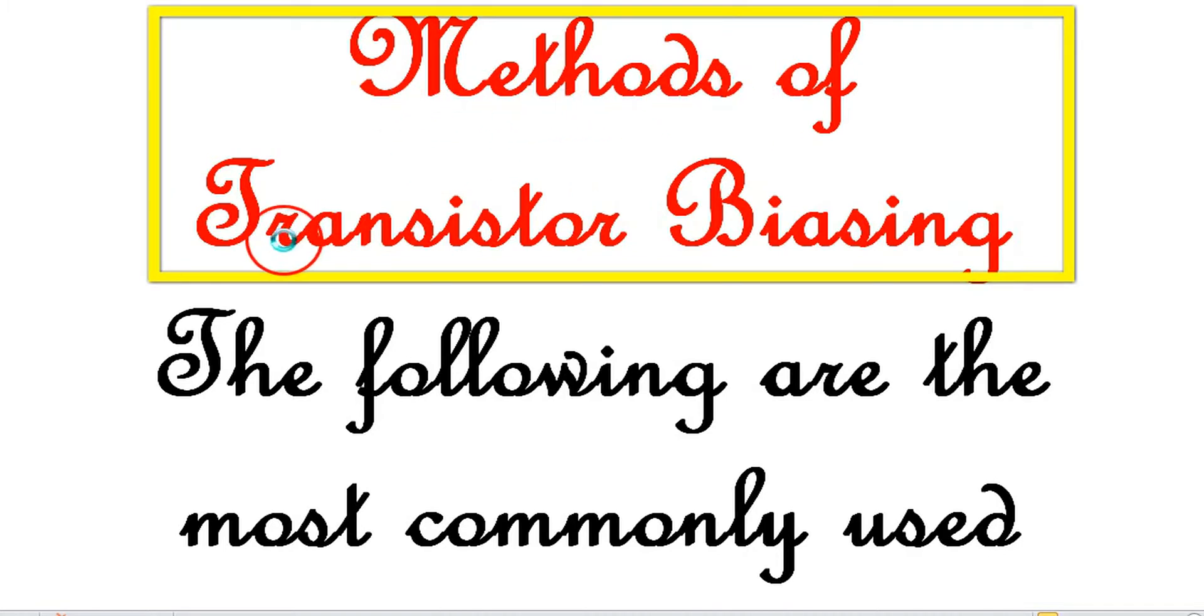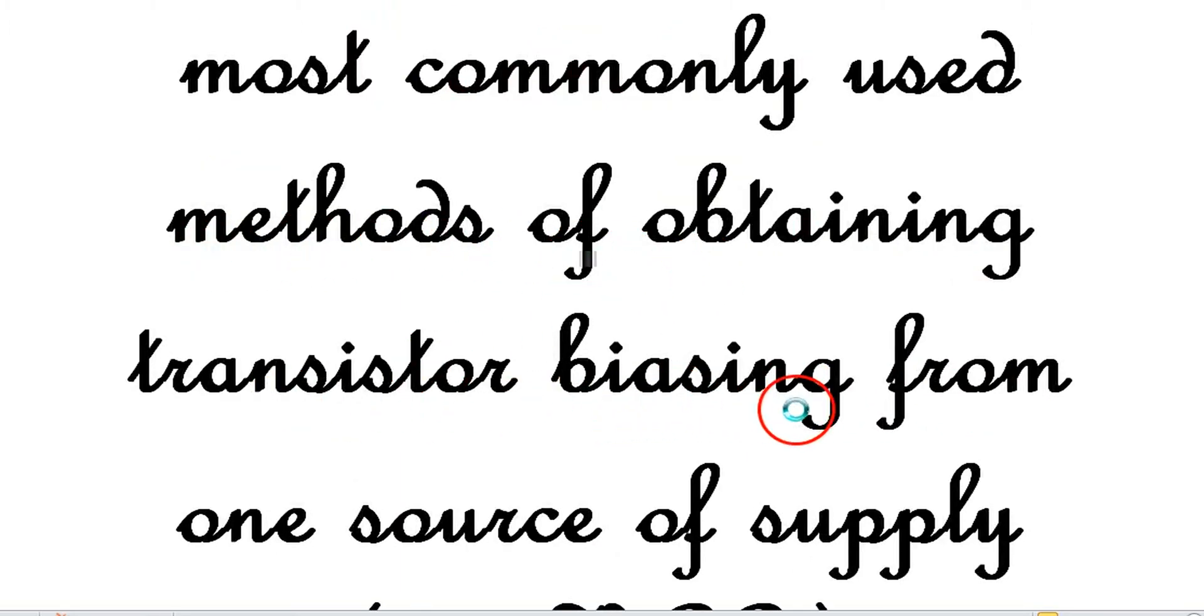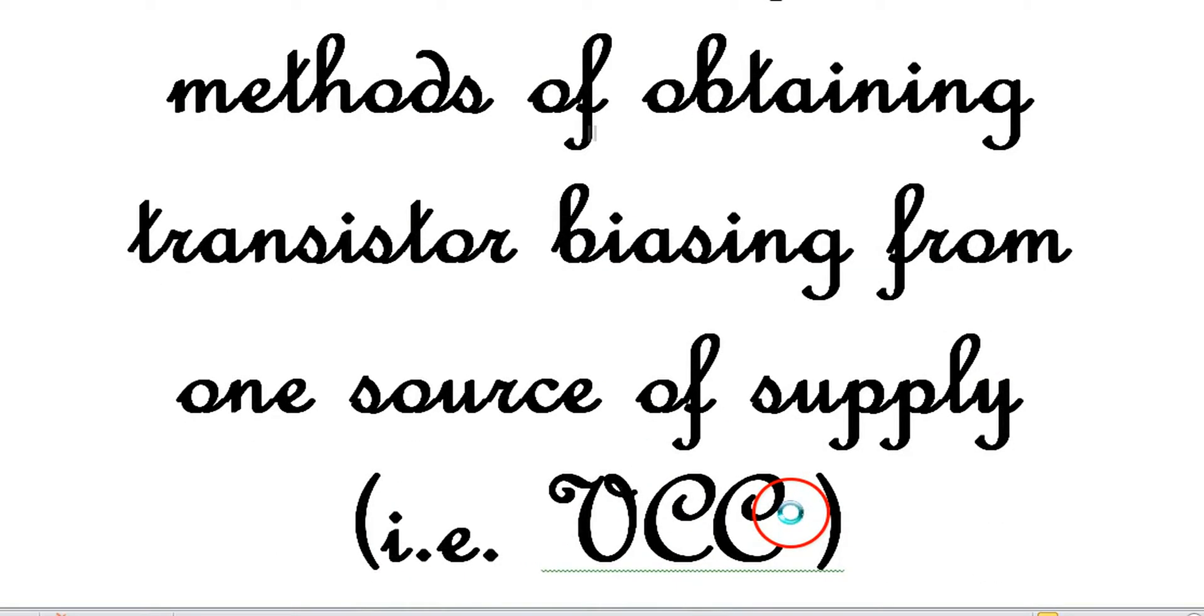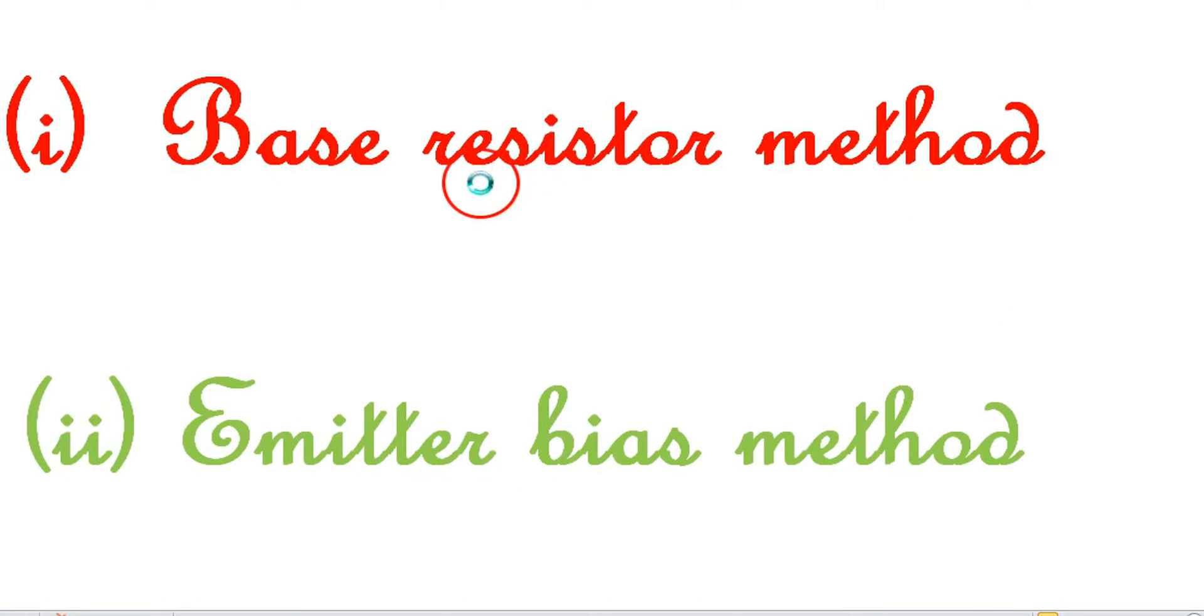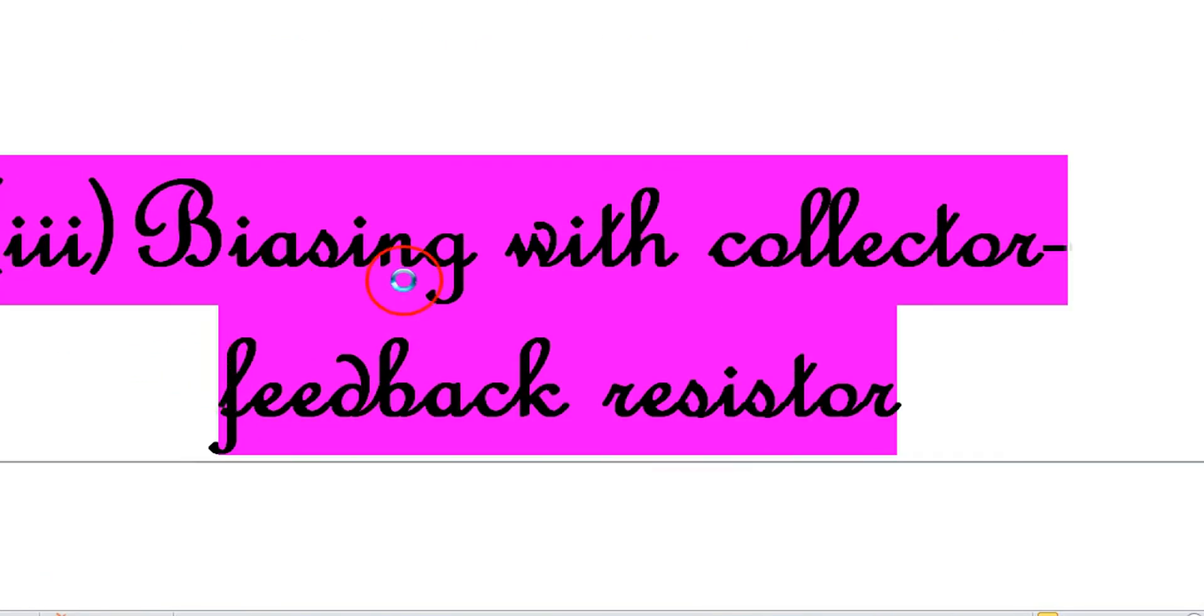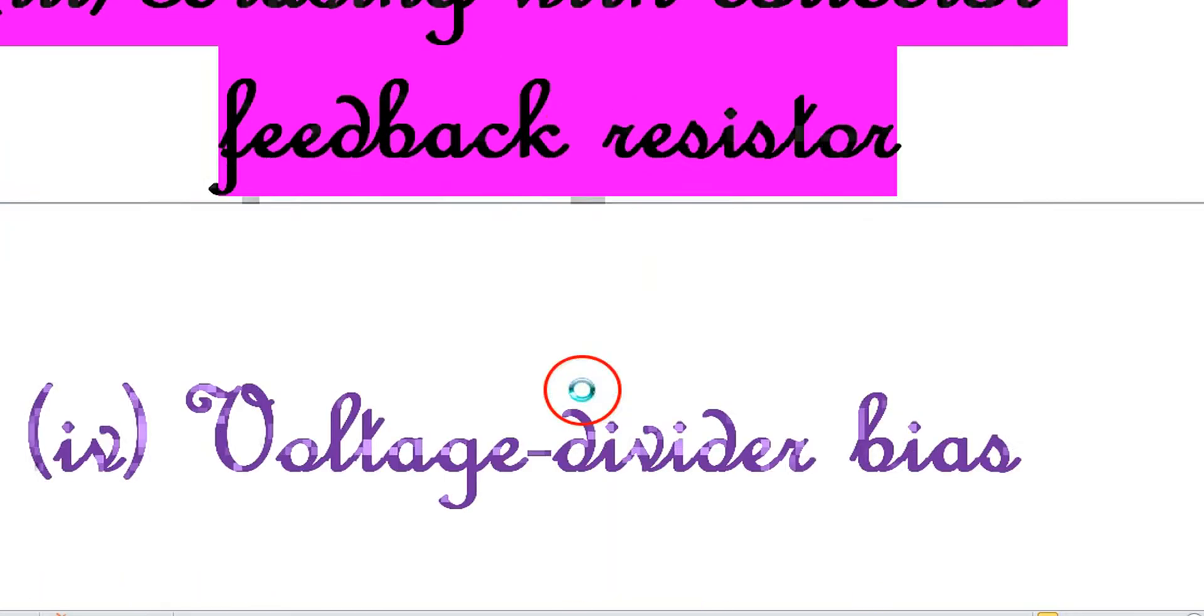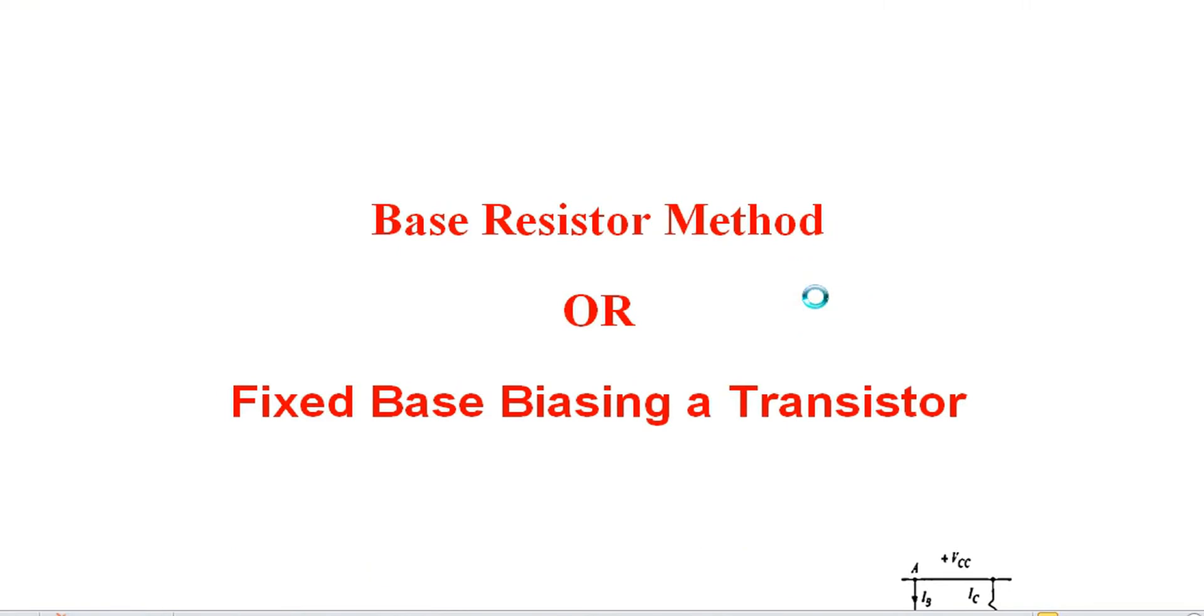Methods of transistor biasing. The following are the most commonly used methods for transistor biasing. First is base resistor method, second one is the emitter bias method, third one is biasing with collector feedback resistor, and fourth one is the voltage divider bias. The first method is base resistor method.